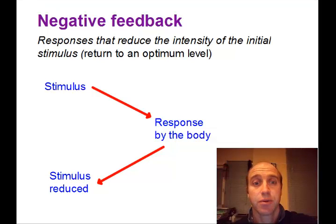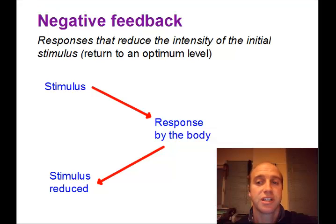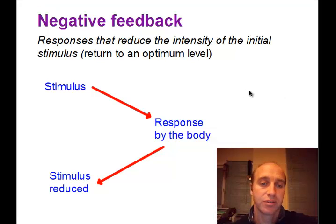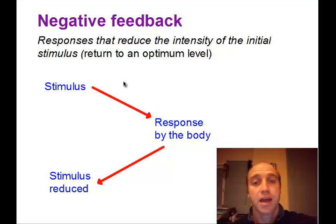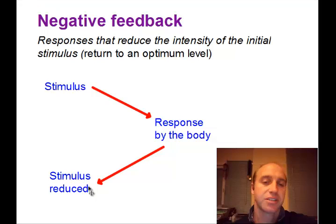When we're looking at homeostasis, what we're really looking at is negative feedback — that's where the response reduces the intensity of the original stimuli, returning it back to that optimum level. So a particular stimulus on an organism causes a response in the body and the stimulus is reduced. Let's use this diagram to consider the concept of negative feedback.